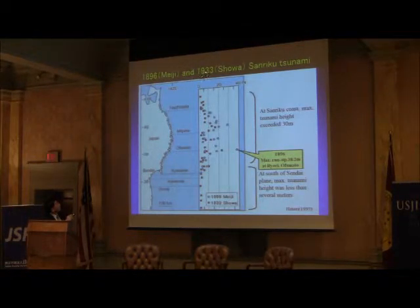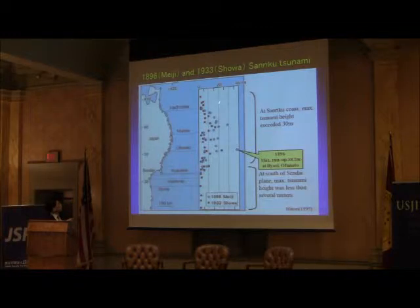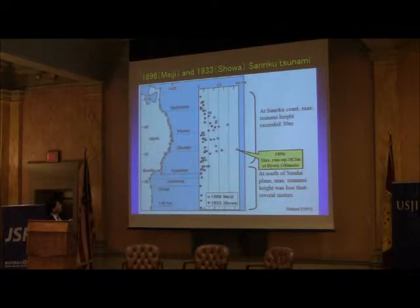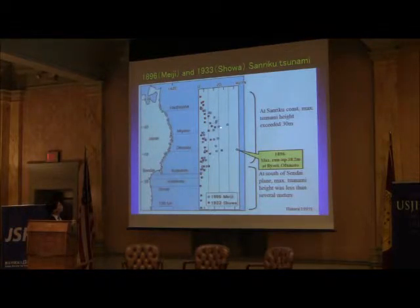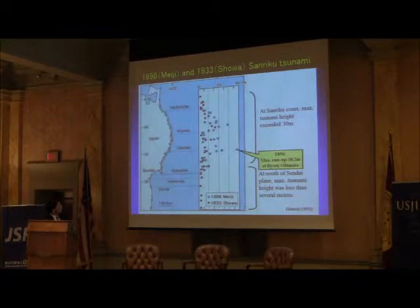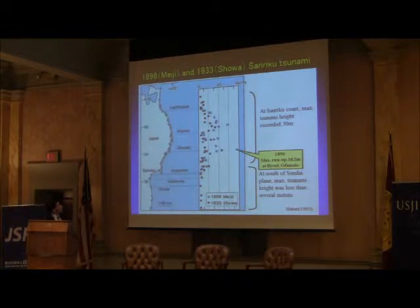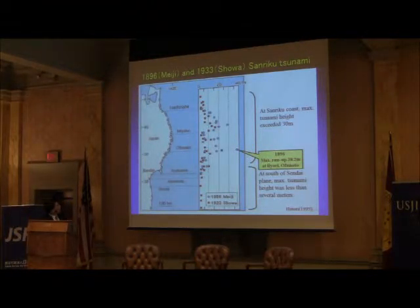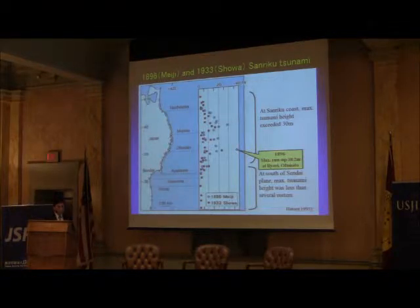In 1933, March 3rd, the Showa Sanriku earthquake again attacked this region and more than 3,000 people were killed. This graph shows the recorded tsunami heights — the blue shows the older Meiji earthquake and the red one is the Showa earthquake. The Meiji earthquake was larger than the Showa earthquake, and the maximum record was 38.2 meters — the Japanese record for the highest tsunami at that time.